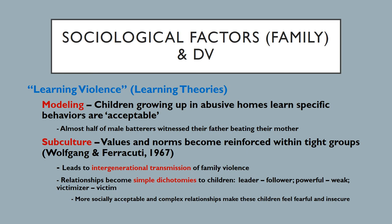What happens when things get too complex? Some people decide to bring it back to the simple dichotomy — they become the leader, the powerful, the victimizer — and that leads to them becoming aggressive and abusive. Others go the opposite direction, saying they can't handle the complexity and retreat into becoming the follower — seeing themselves as the weak one, the victim — which leads them down the road to self-isolation, self-harm, and further victimization.